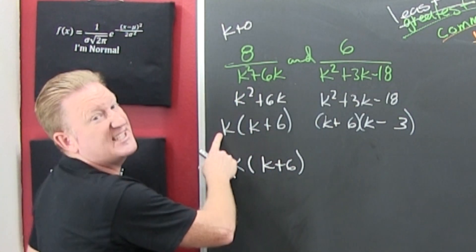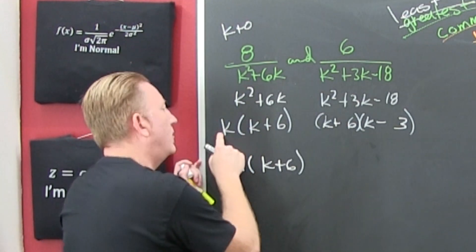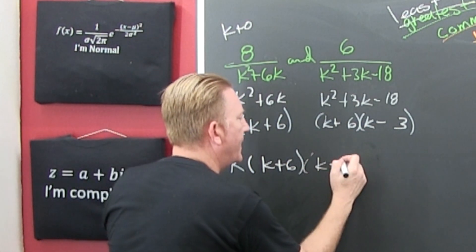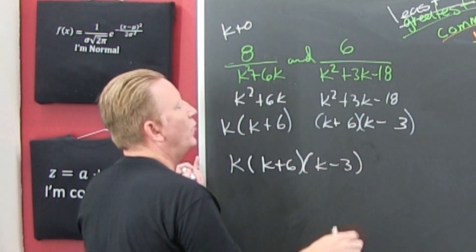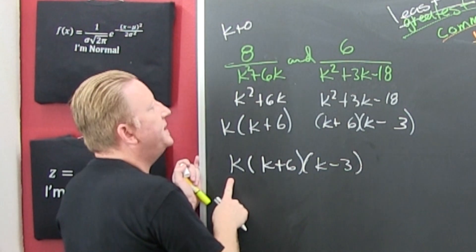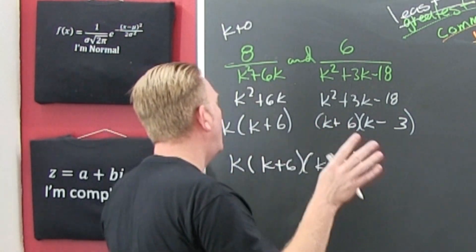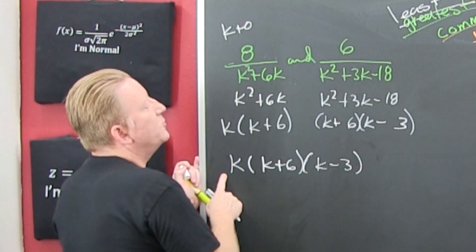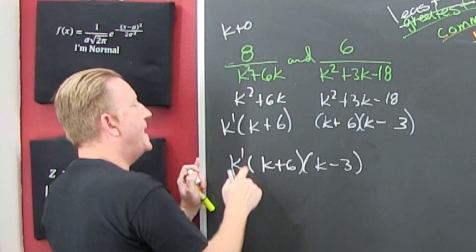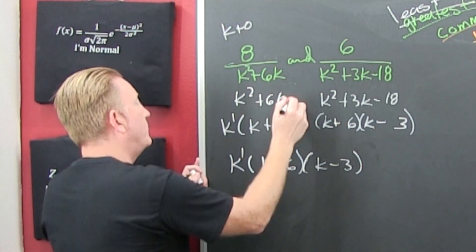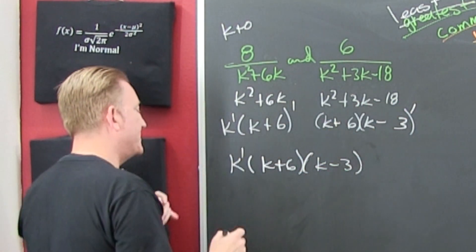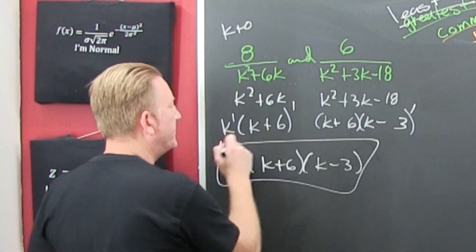And what else needs to be in there? There needs to be a (k minus 3) in there. Why? Because if it's in one of them, then it's in the least common denominator. Now I need to include them in their greatest multiplicities. This one is multiplicity 1, and that one — multiplicity 1 is its biggest. Multiplicity 1 is its biggest. Multiplicity 1 is its biggest. This is the least common multiple.